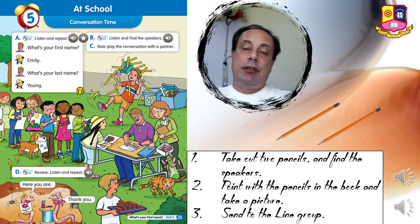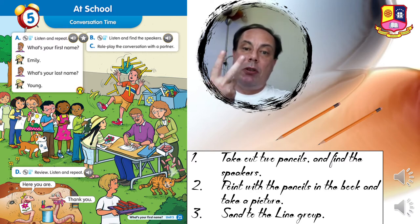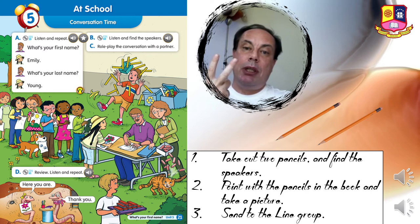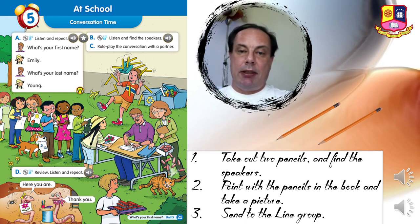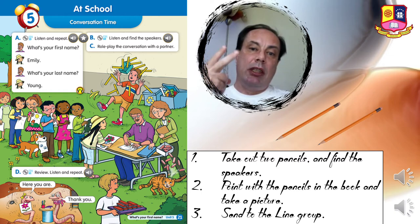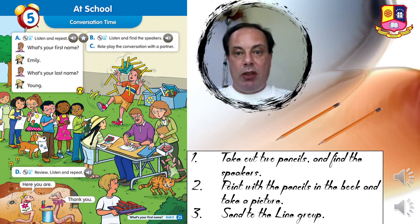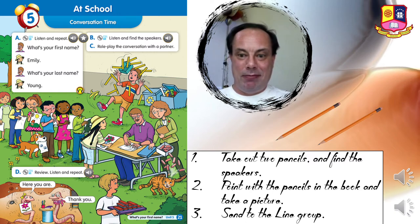I will play two conversations and I want you to take out two pencils and point in the picture with the pencil at the speakers. Take a picture and send to the line group. Listening 60. B — listen and find the speakers.